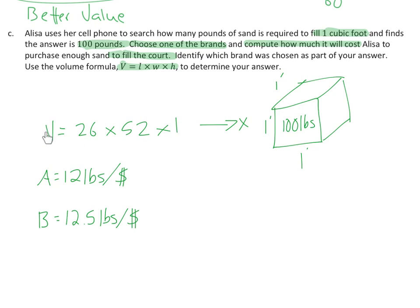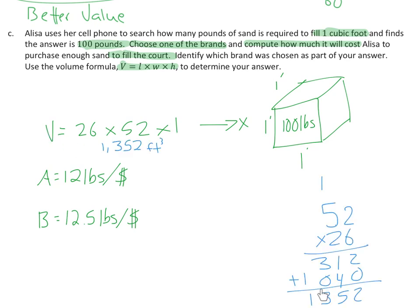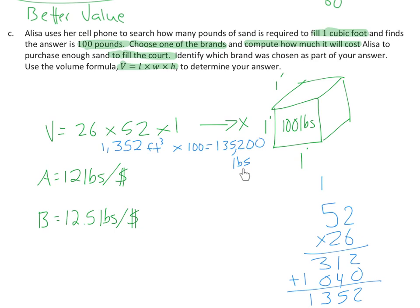I need to figure out how much it's going to cost to fill the entire volleyball court with sand — it'll be more than you expect. First, find the volume of the court: 26 times 52. I did my work down here, and it's 1,352 cubic feet. Then I multiply that by 100 because each cubic foot is 100 pounds: 1,352 times 100 gives 135,200 pounds of sand needed to fill the volleyball court. Remember, this is a full-size volleyball court — this is very big. Now I can divide by 12 using A, or by 12.5 using B.